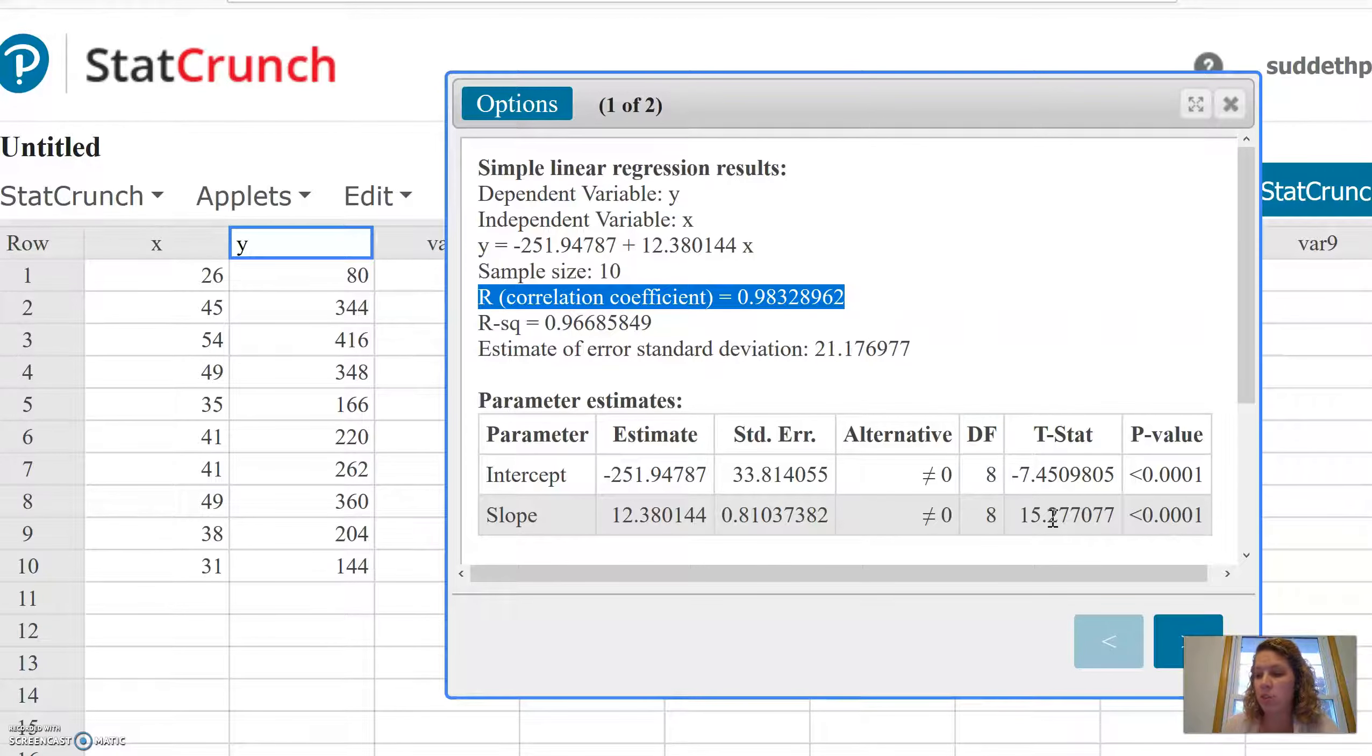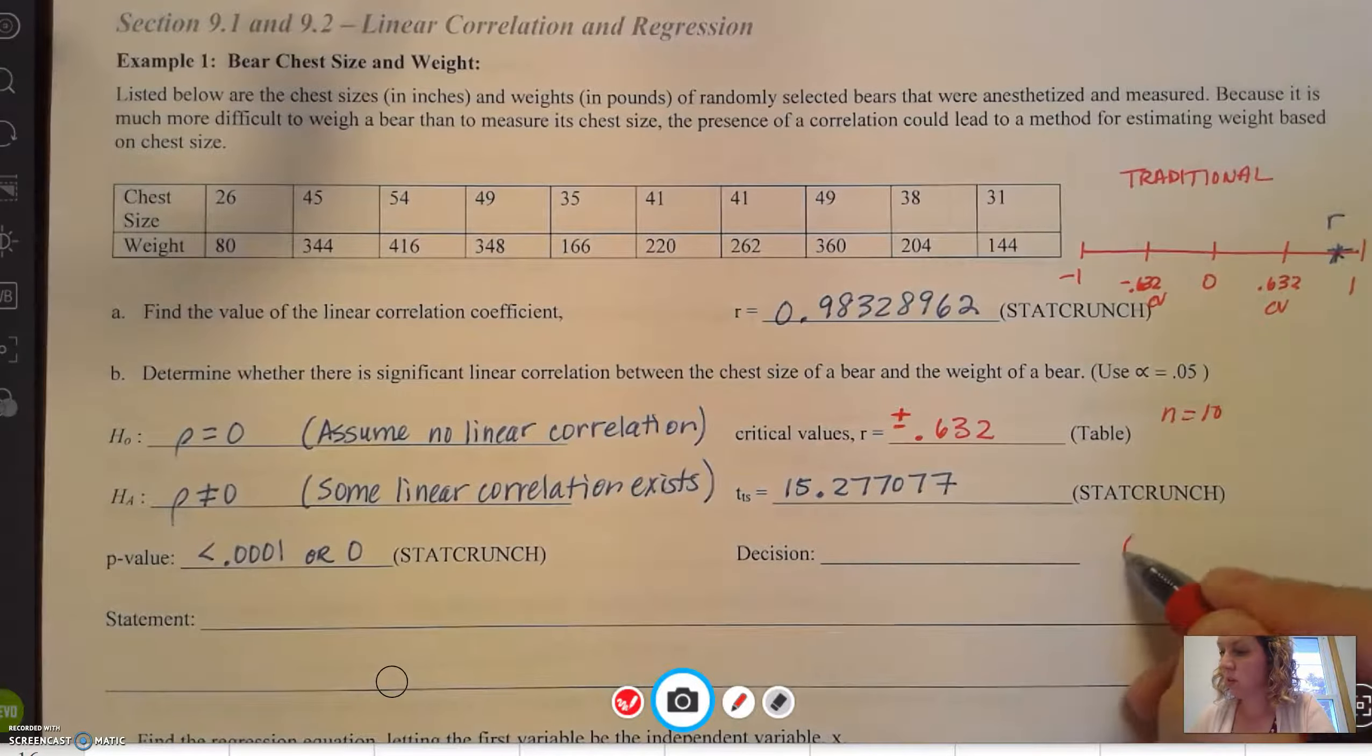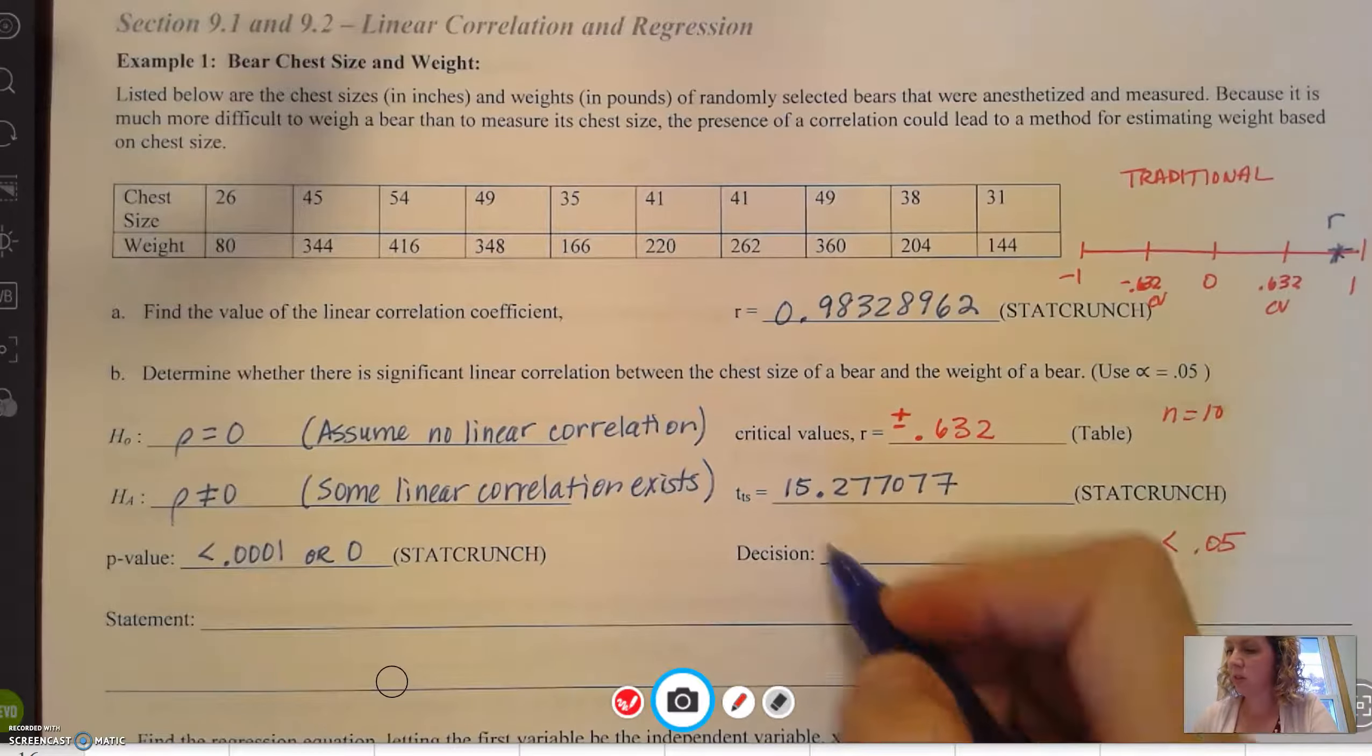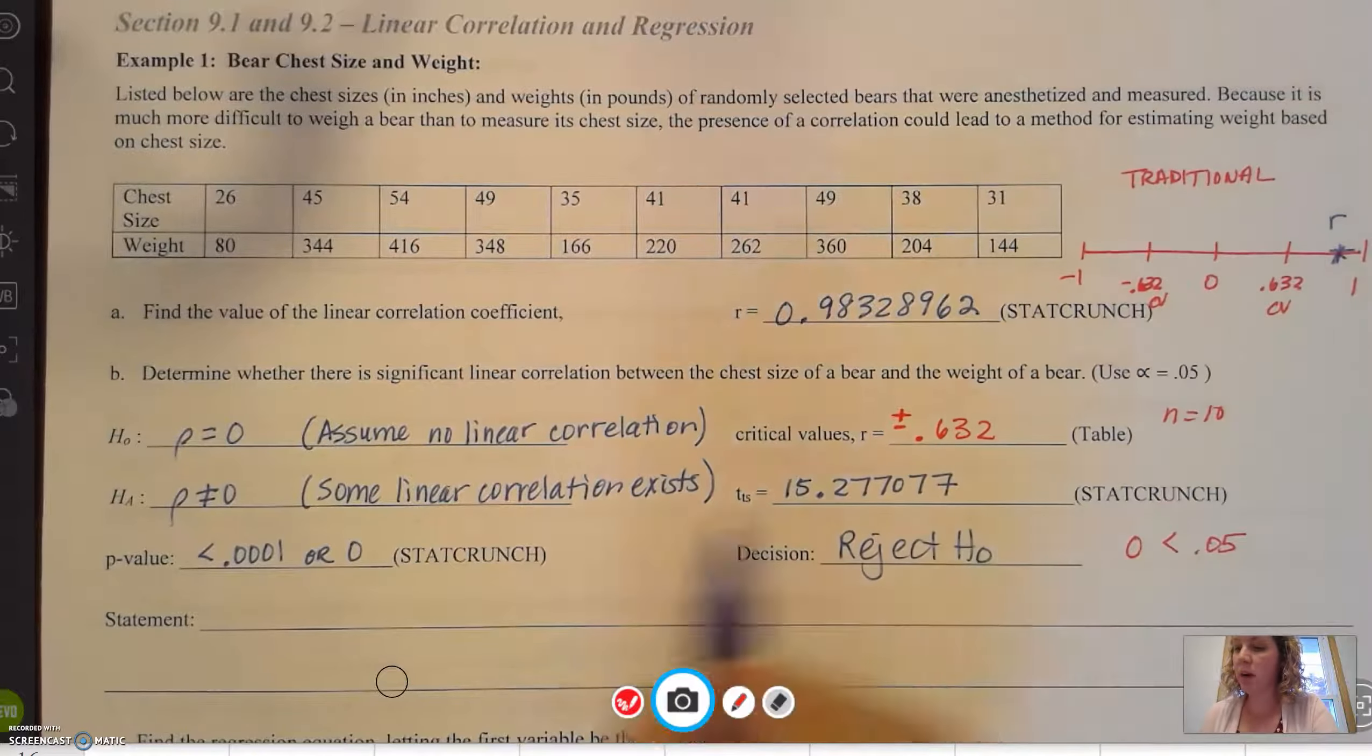So then our decision. Remember, back in the last chapter of hypothesis testing, if our p-value here, 0, is less than our significance level, we're going to reject the null hypothesis.